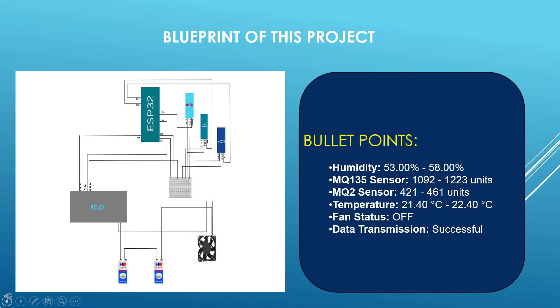Key observations: humidity levels were recorded between 53% and 58%, indicating stable moisture conditions. MQ-135 sensor values range from 1,092 to 1,223 units and MQ-2 sensor values from 421 to 461 units, providing air quality measurements.